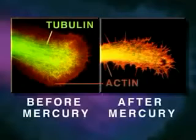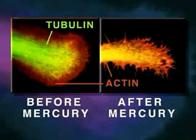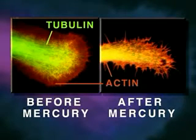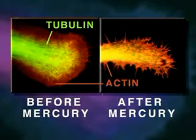Shown here is a neurite growth cone stained specifically for tubulin and actin, before and after mercury exposure. Note that the mercury has caused disintegration of tubulin microtubule structure.